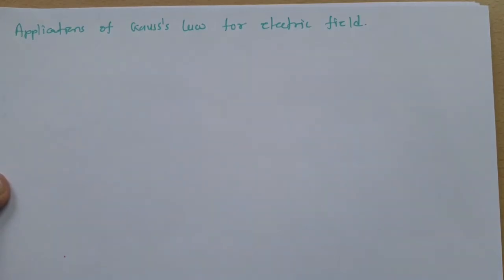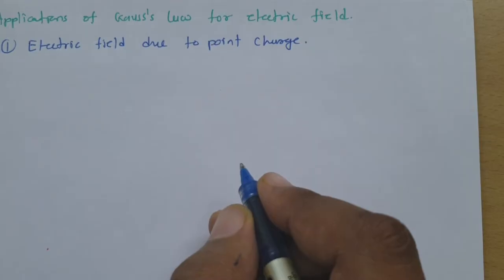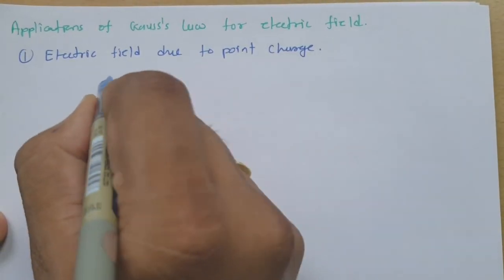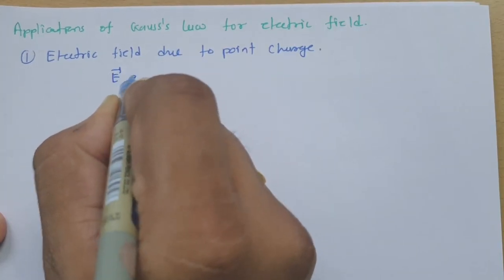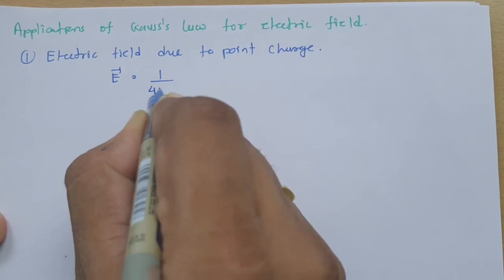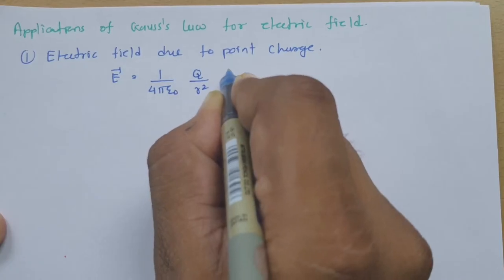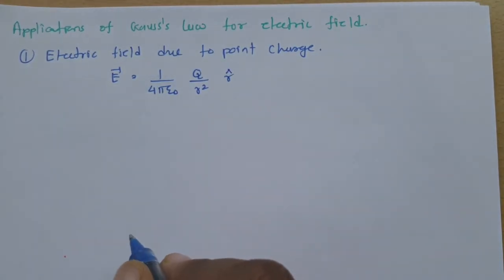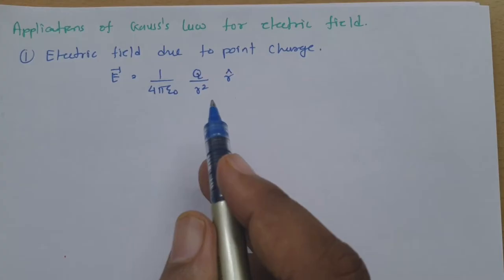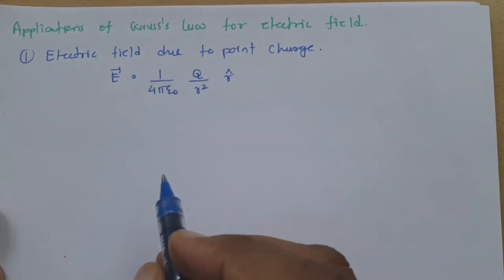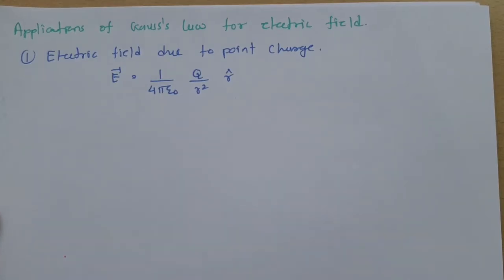Let us have the first application of Gauss's Law for electric field due to point charge. We know that the electric field is (1 / 4πε₀) × (q / r²) × r̂. But let us derive this based on Gauss's Law. As per Gauss's Law,